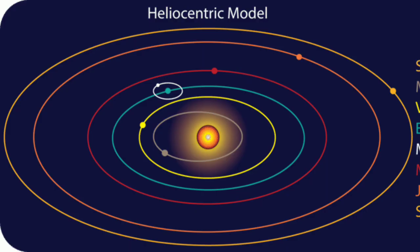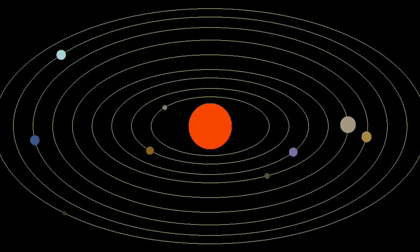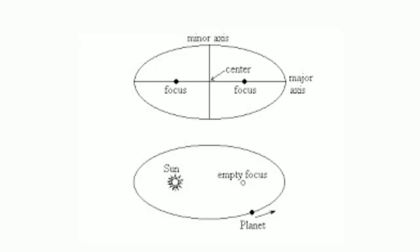So all the planets revolve around the sun in elliptical orbits and sun is on one of the foci of that ellipse.